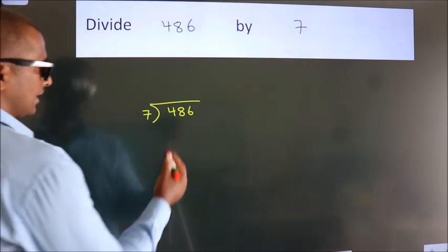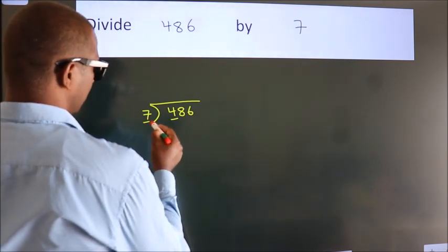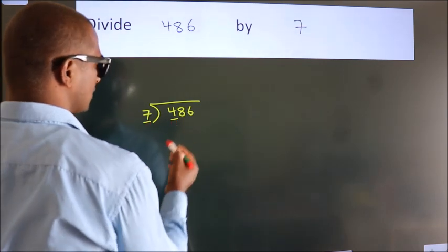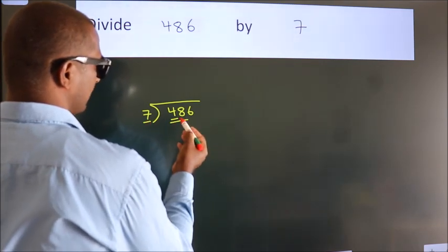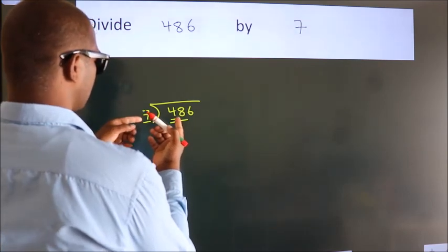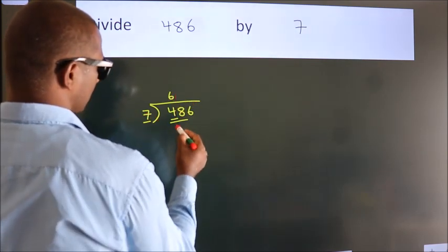Next, here we have 4, here 7. 4 smaller than 7. So we should take 2 numbers, 48. A number close to 48 in 7 table is 7, 6, 42.